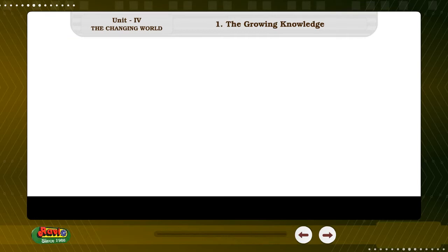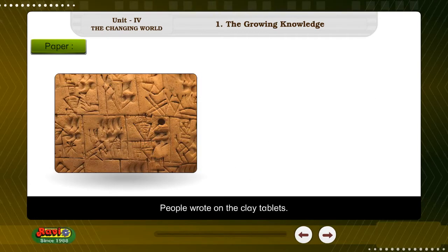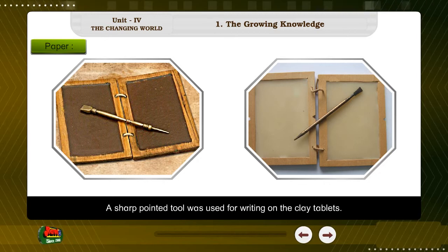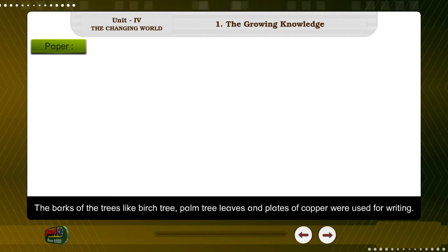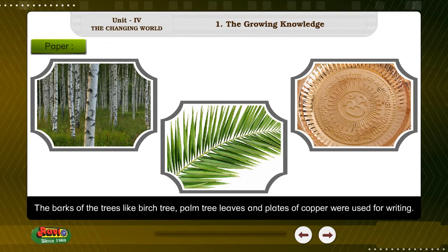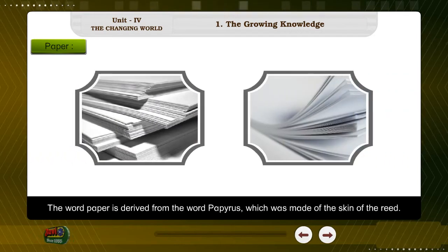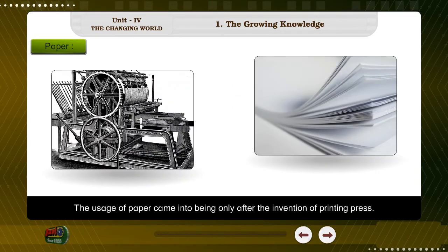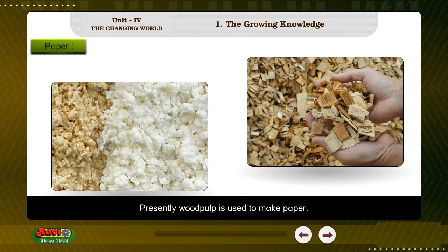There was no paper previously. People wrote on clay tablets using a sharp pointed tool. The bark of trees like the birch tree, palm tree leaves, and plates of copper were also used for writing. The word 'paper' is derived from the word 'papyrus,' which was made from the skin of the reed plant and was first developed in Egypt. Later, papyrus became paper, and the widespread usage of paper came only after the invention of the printing press. Presently, wood pulp is used to make paper.